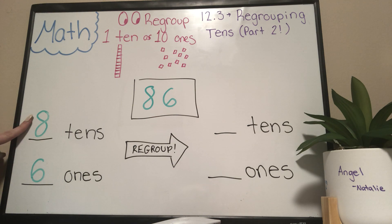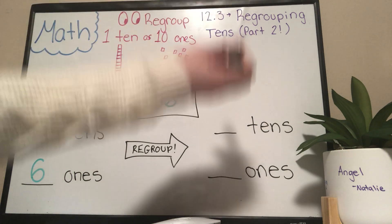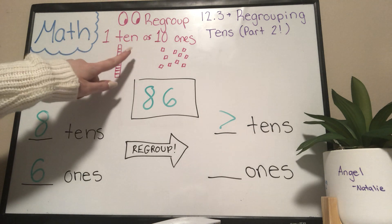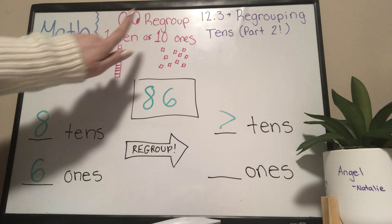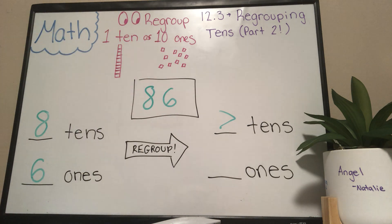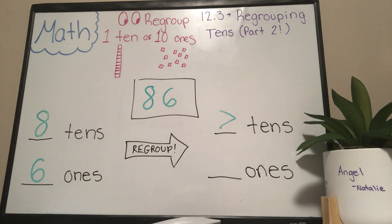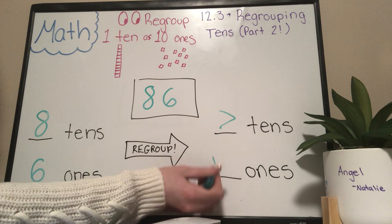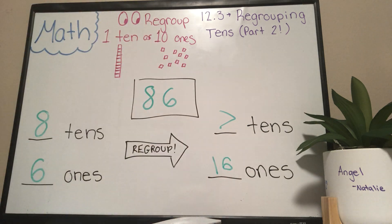So what is eight take away one? Eight take away one is seven. We're taking away ten here — remember our helpful hint: regroup one ten as ten ones. So what is six plus ten ones? Six plus ten ones is sixteen. That's your answer for this question.